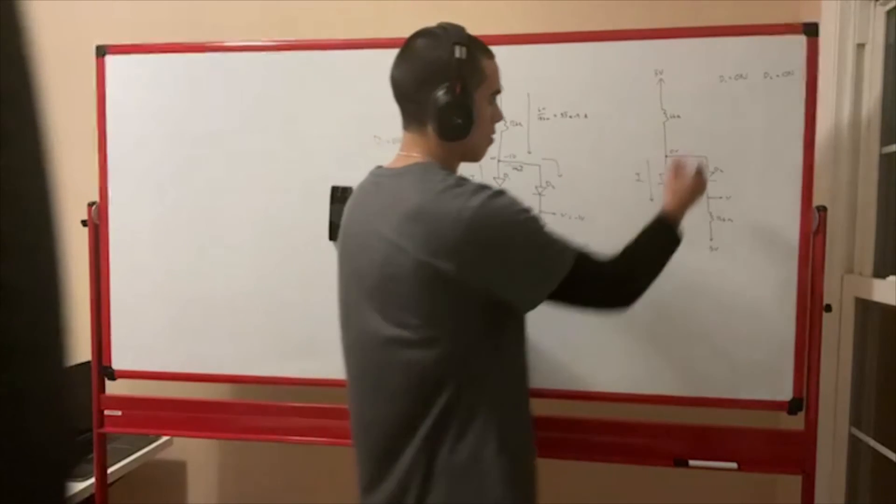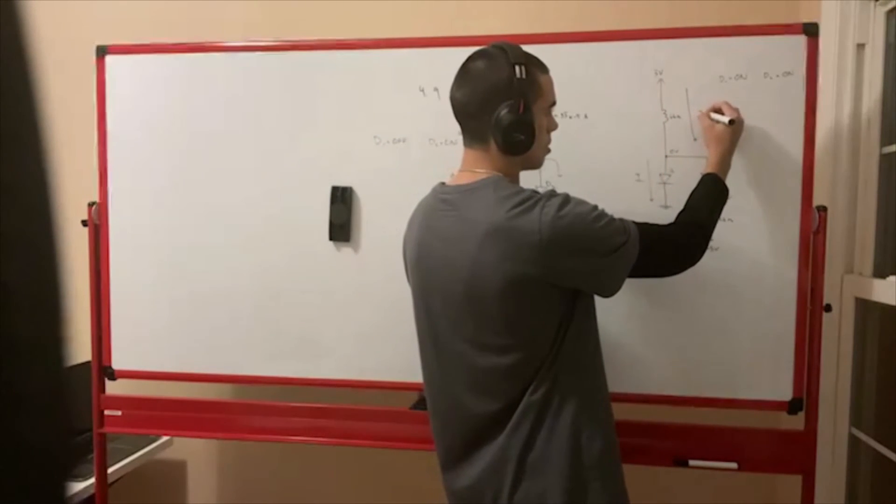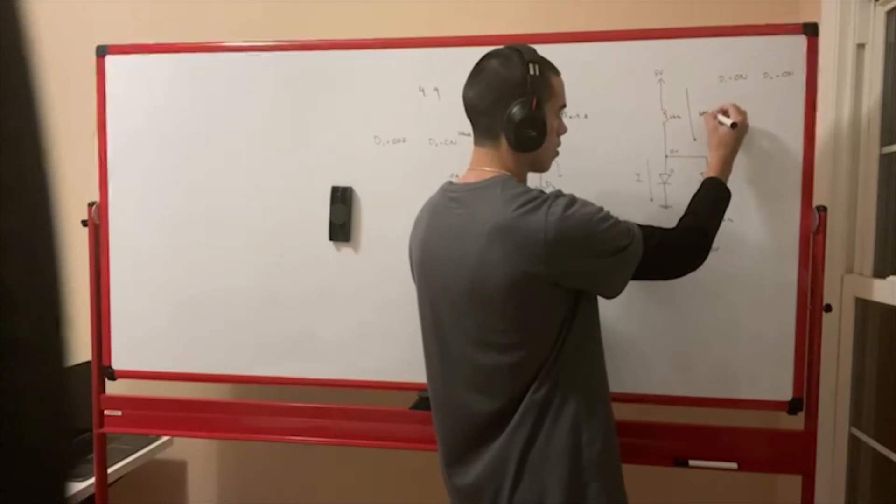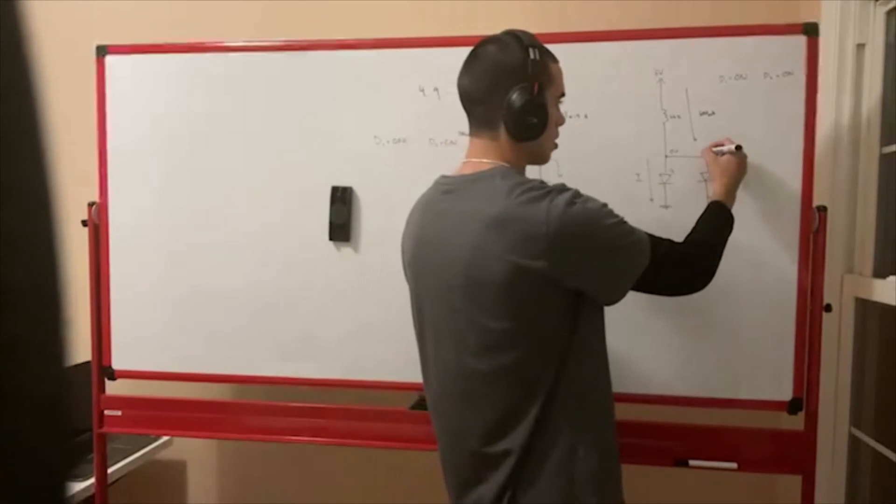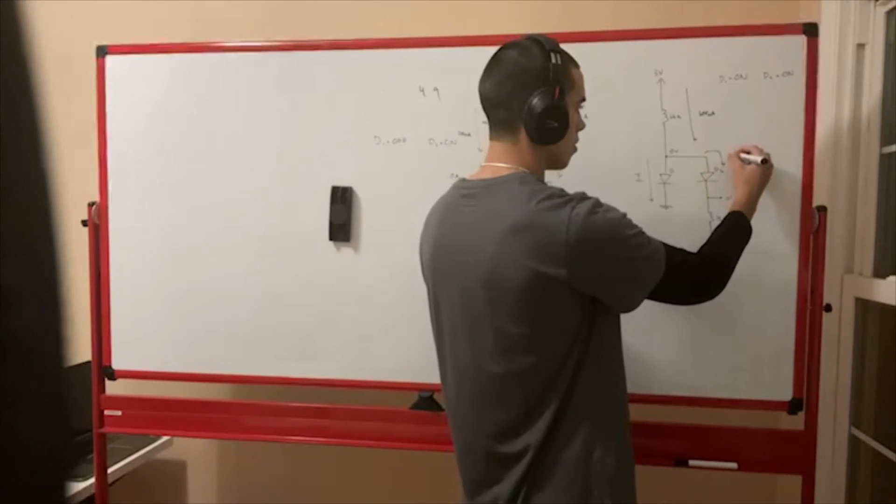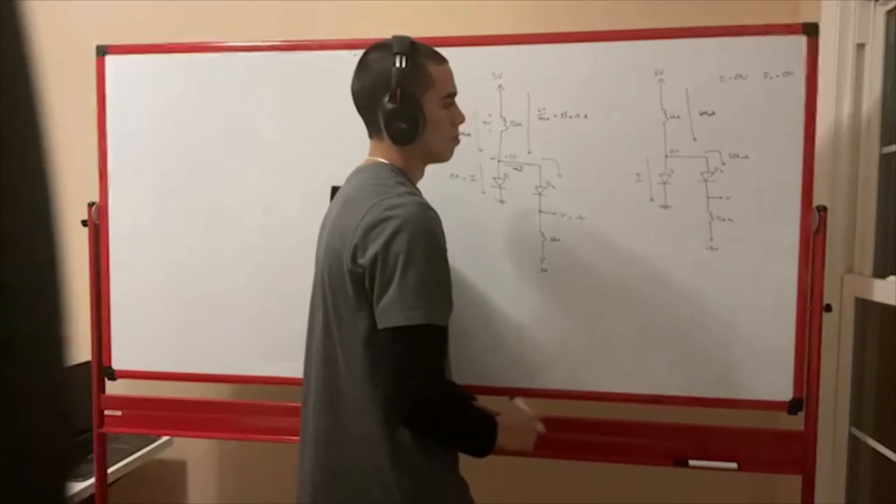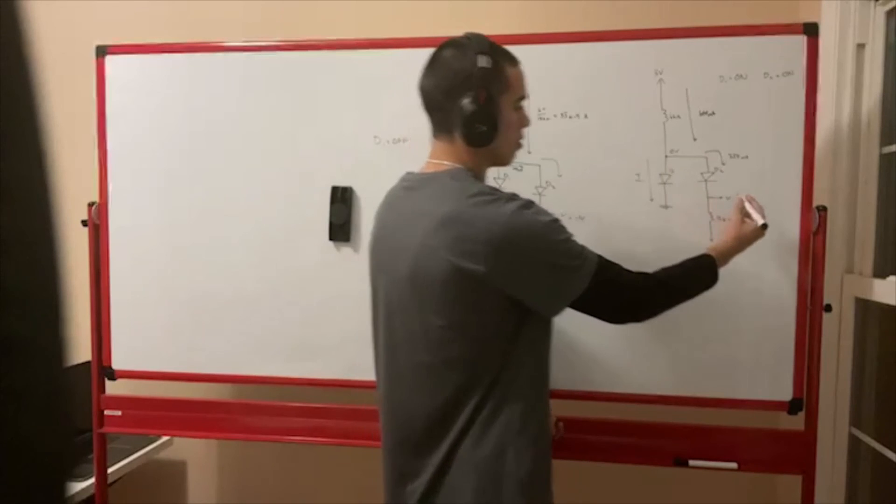So then you're going to have this current going through here. 3 to 0 divided by 6 kilo ohms is 500 micro amps. And from 0 to negative 3 over 12 kilo ohms, you're going to get 250 micro amps.